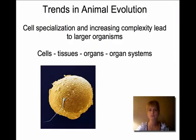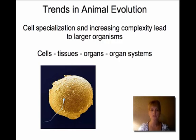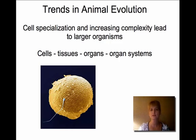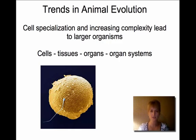In terms of trends in animal evolution, cell specialization and increased complexity lead to larger organisms. A very simple animal may have only a few unspecialized cells, but as complexity increases, you see kidney cells performing a specific function and heart cells performing a different specific function. This increasing complexity allows for larger animals. There is a hierarchy: cells form tissues, tissues form organs, and organs form organ systems.